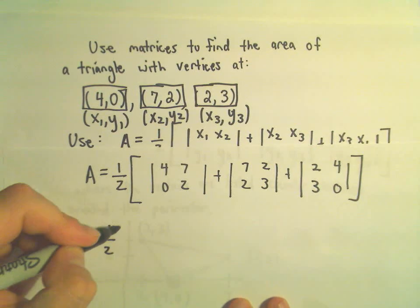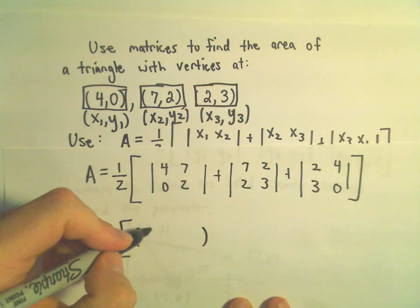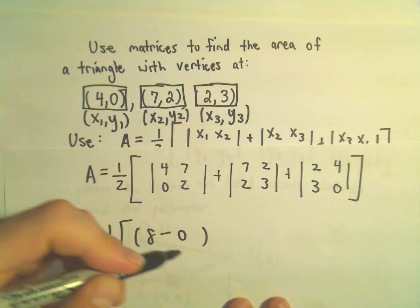Alright, so let's see what we get here. We can compute these determinants, so we can do 4 times 2, which is 8. 0 times 7 will be 0.